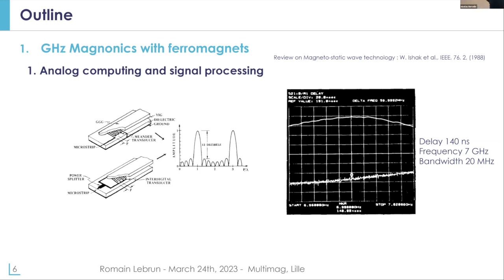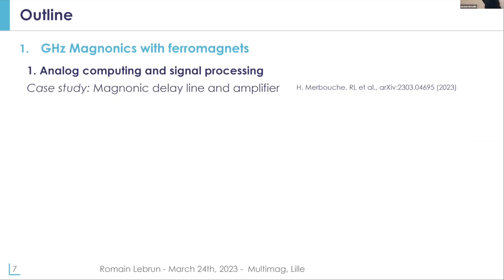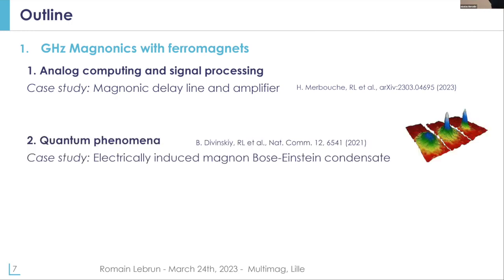It was quite difficult to optimize those devices because of the nanofabrication process, the quality of the thin films, and because it was quite difficult to simulate them. This is something we started again, especially at Thales, where we wanted to develop a magnetic delay line as a use case. I will show what we've been trying to do to develop magnonic amplifiers, which is a key issue if you want to make circuits based on magnonic devices, and then discuss quantum phenomena based on magnonics.